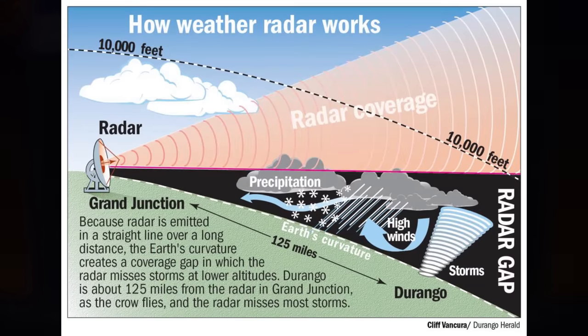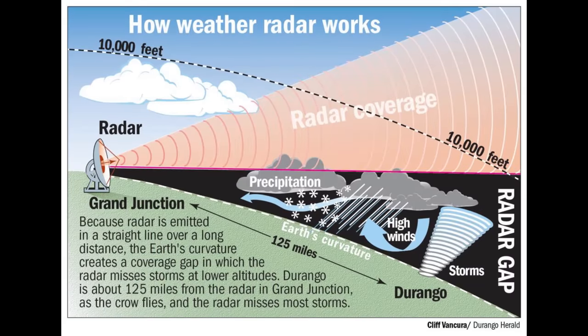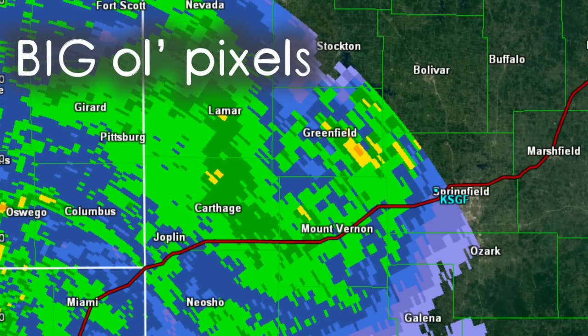Each radar station has a maximum base reflectivity range of about 143 miles. But due to the curve of the earth, a radar beam that is 100 feet above the ground at the radar site is actually 10,000 feet above the ground 100 miles away. Not only that, but the beam gets wider the farther away it is from the site, resulting in lower resolution for that area.